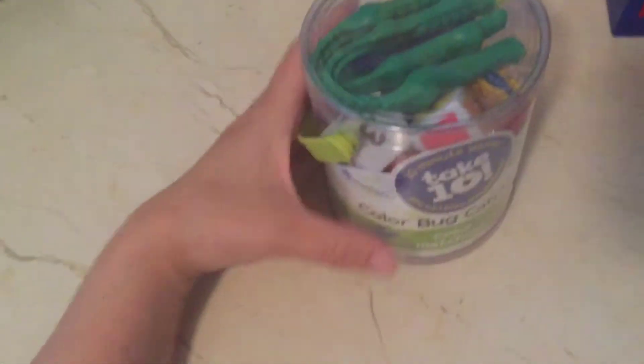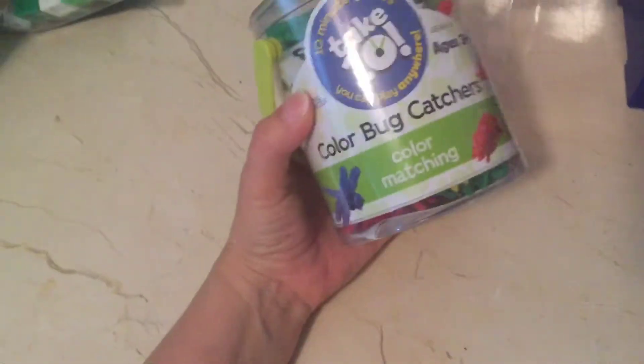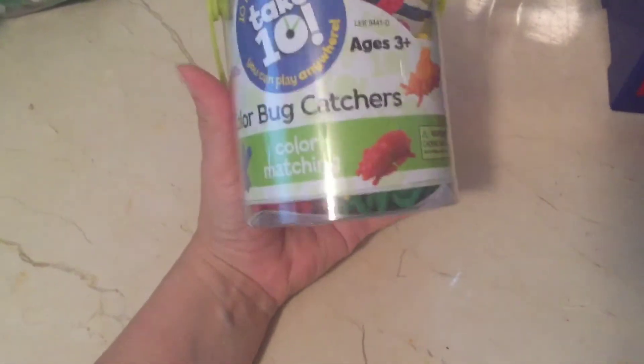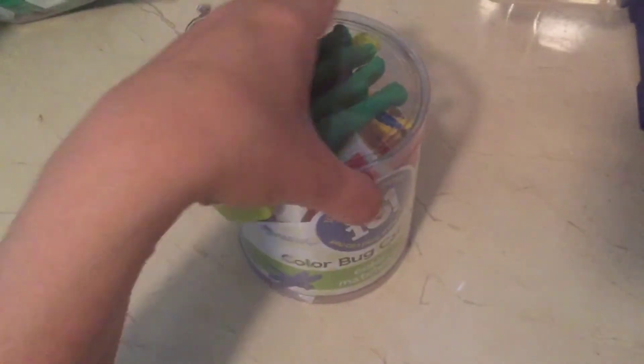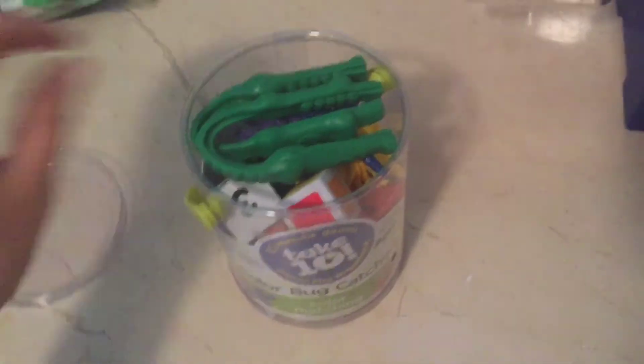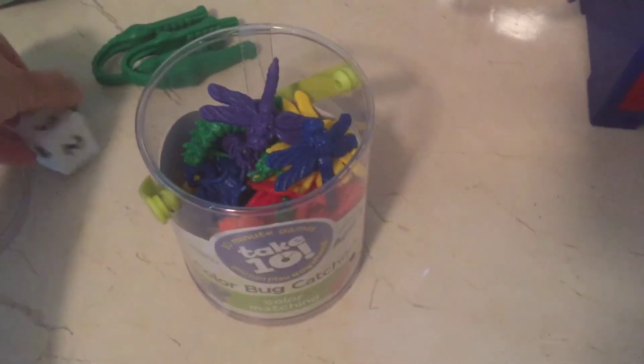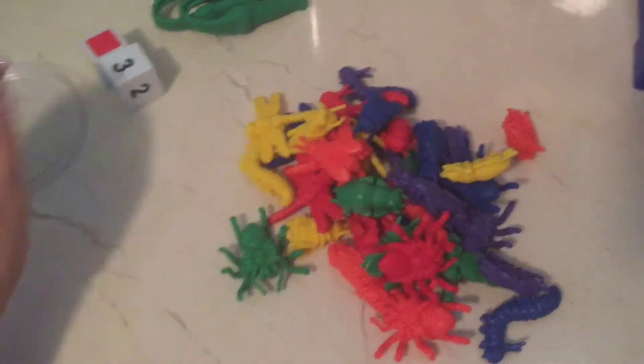And another game we got which has proven to be super fun is this Take 10 game. It's a color bug catcher game. The idea of this game—I'll quickly show you—my son loves this game, if he sees it he's gonna want to play it. So basically dump all the critters on the carpet is how we do it and we sit in a circle around it.